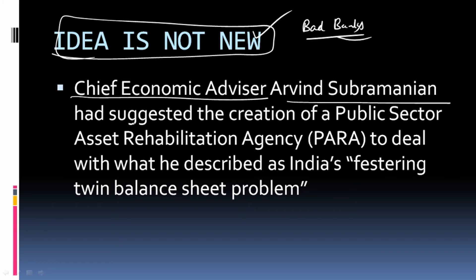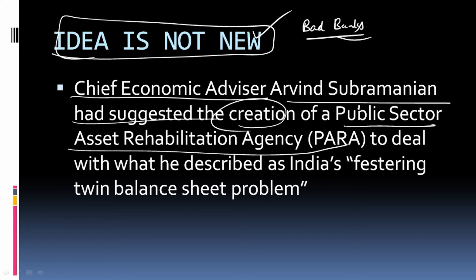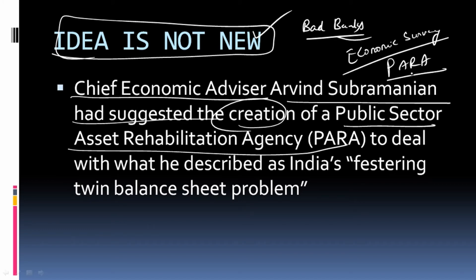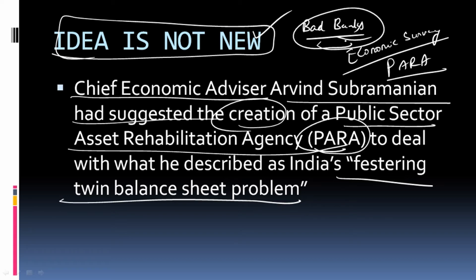The idea of a bad bank is not new. Chief Economic Advisor Arvind Subramanian had already suggested the creation of a Public Sector Asset Rehabilitation Agency (PARA) in the Economic Survey itself — a government document — to deal with what he described as India's festering twin balance sheet problem. This PARA is now referred to as the bad bank.